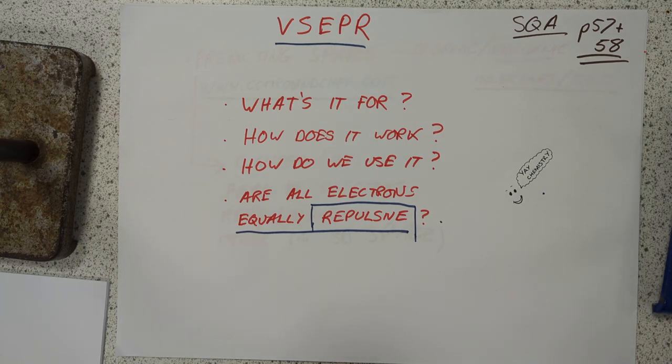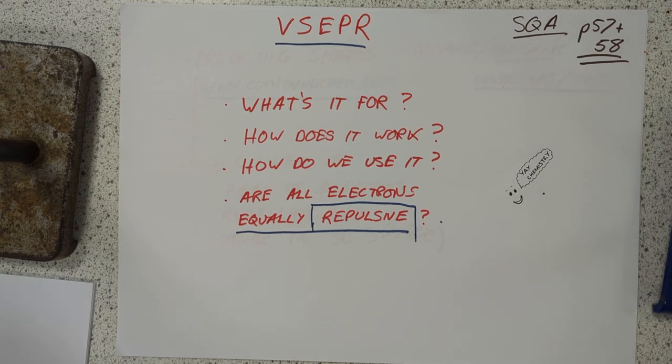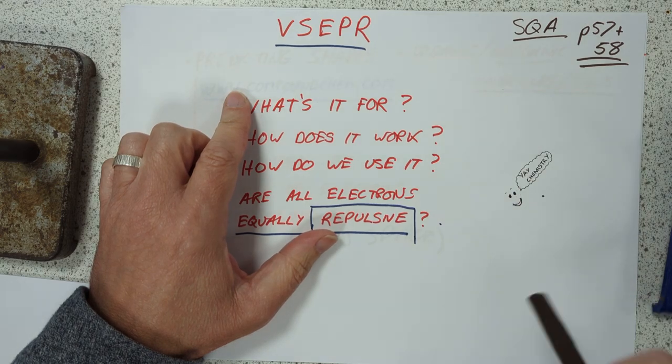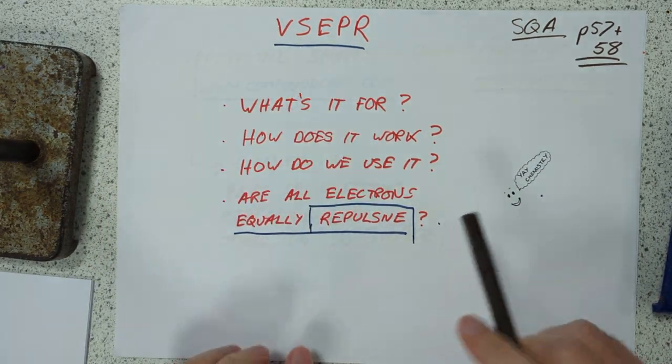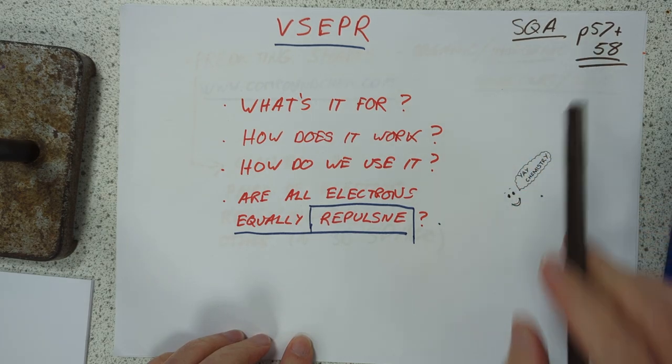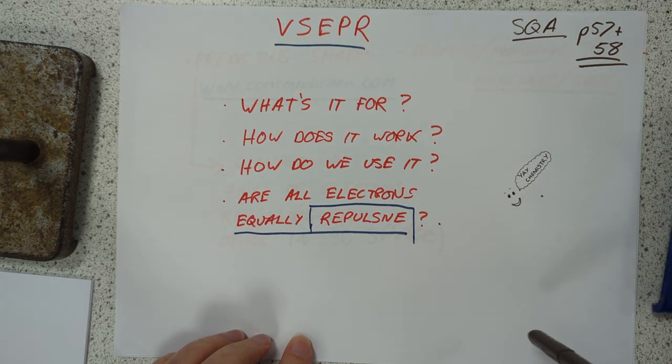Good afternoon folks, welcome back to Advanced Higher Chemistry. It's been a while since I've done one of these. Third time's a charm. So we are doing a special request by Lina. We're doing valence shell electron pair repulsion theory, SQA pages 57 and 58. I'd like to run through this.